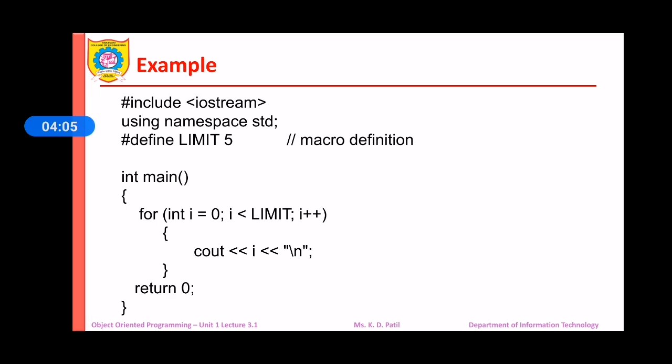See, our statement will print that output. We will get the output as 0 to 4. Now, if you observe that LIMIT is replaced by 5 by the compiler and hence we got the output as 0 to 4. If we would have a LIMIT as 9, the value of LIMIT as 9, then we would have got the output as 0 to 8.